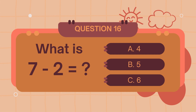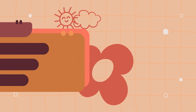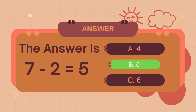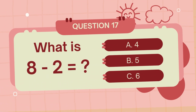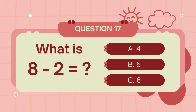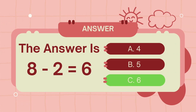What is 7 minus 2? The answer is 5. What is 8 minus 2? The answer is 6.